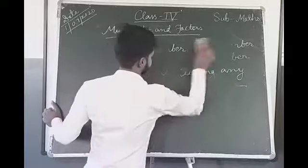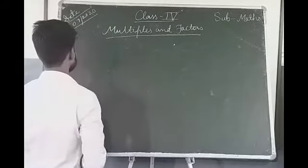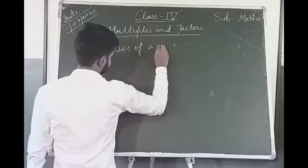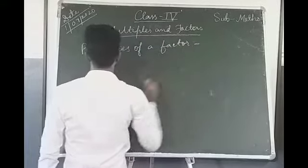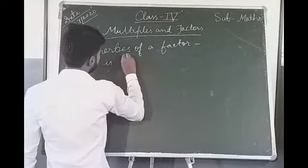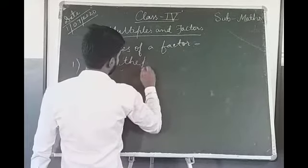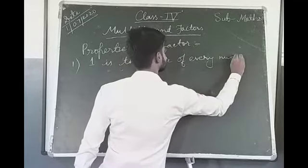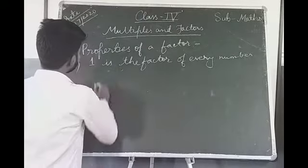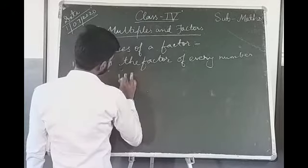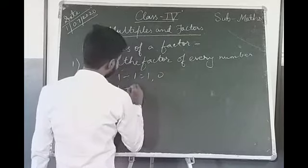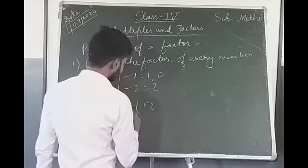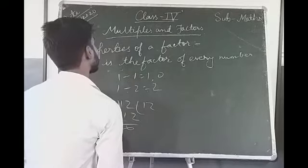Now we will learn the properties of a factor. Property 1: 1 is the factor of every number, because 1 divides every number. For example, 1 divides 1 with remainder 0. 1 divides 2, and in this way 1 can divide any number, like 12. So we can see that 1 is the factor of every number.